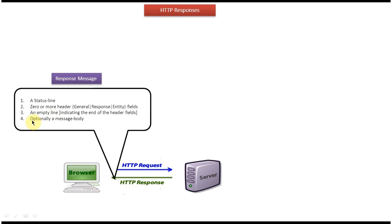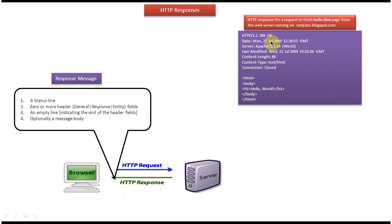We will now see some sample HTTP responses. In this first sample, the first line is the status line, and from date to connection is the response header. Then you can see the empty line indicating the header fields are finished, and the remaining part is the message body. 200 OK means the server processed the HTTP request successfully and it sends a success message to the client.